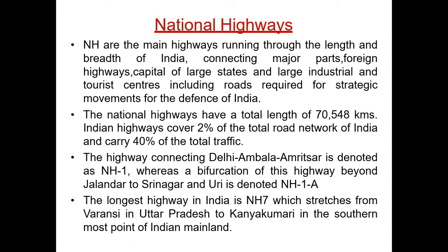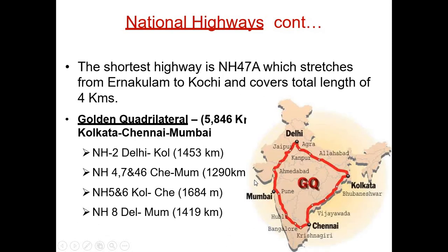Indian highways cover 2 percent of the total road network of India and carry 40 percent of the total traffic. The highway connecting Delhi, Ambala, and Amritsar is designated as NH1, whereas the bifurcation of this highway beyond Jalandhar to Srinagar and Uri is denoted as NH1A. The longest highway in India is NH7, which stretches from Varanasi in Uttar Pradesh to Kanyakumari at the southernmost point of the Indian mainland. The shortest highway is NH47A, which stretches from Ernakulam to Kochi and has a total length of only 4 kilometers.